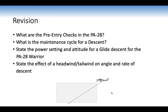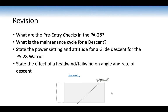The power setting and attitude for a glide descent from the PA28 Warrior is 73 knots — important because we'll be doing a gliding descending turn, so we maintain 73 knots. Regarding the effect of headwind and tailwind on angle and rate of descent: in a tailwind, the angle decreases but the rate stays the same. In a headwind, the angle of descent increases but the rate of descent stays the same.